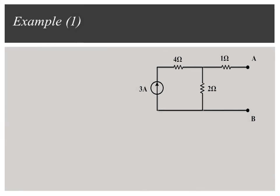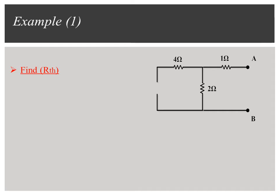To find R-Thevenin, replace the current source with an open circuit and calculate the resistance between terminals A and B. The figure shows that the 1 Ohm and 2 Ohm resistors are connected in series. So R-Thevenin is equal to 3 Ohms.